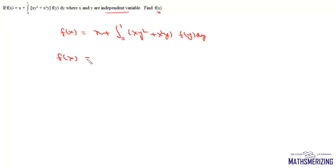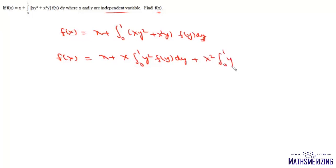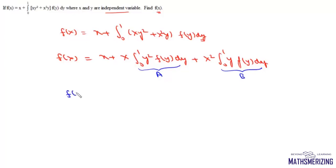We can write f(x) as x plus, since the variable of integration is y, we can separate x out: x times the integral from 0 to 1 of y²f(y) dy, plus x² times the integral from 0 to 1 of y·f(y) dy. These are simple definite integrals with no parameter, so their values will be constants — call them a and b respectively.